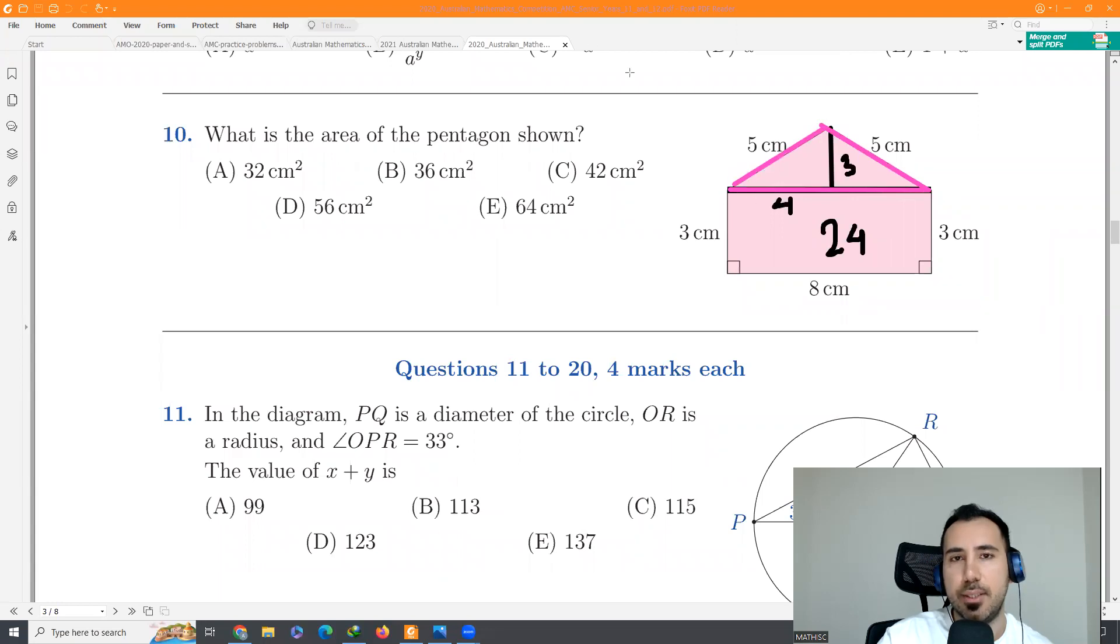So what is the area of the triangle? Height is 3, base is 8. 3 times 8 divided by 2 is 12. Total area would be 12 plus 24, which is 36.